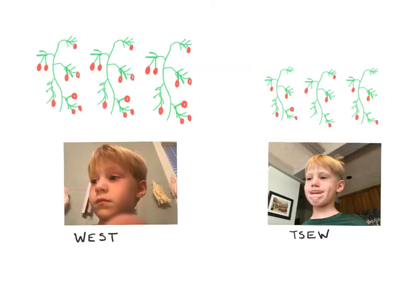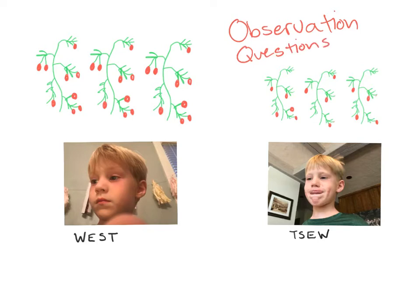The first part of the scientific method is observation, and with that observation we generally come up with questions. The observation we're making here is with tomato plants, similar to your lab document. We have two people — West on the left and his twin Tzu on the right. Both planted tomatoes in the spring, and throughout the summer West's tomatoes grew much taller and produced many more tomatoes than Tzu's.